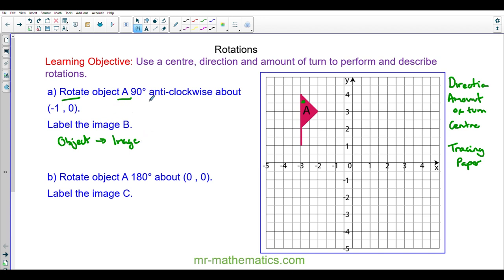We're going to rotate object A 90 degrees anti-clockwise about the center negative one and zero. So we're going to begin by placing tracing paper over the object. And now I'm going to mark the center which is negative one and zero. And this will be our pivot point. And now I'm going to put a point on each of the vertices of our object.